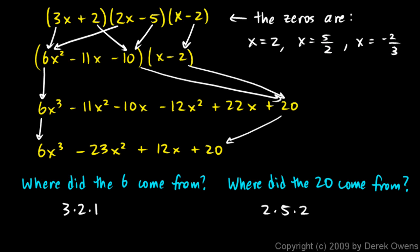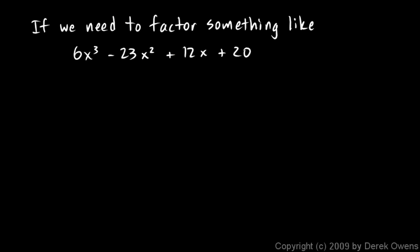So, I'll say that like this. If we need to factor something like this, 6x³-23x²+12x+20, a good place to look for the zeros of this polynomial would be the numbers in the list formed by taking factors of 20 divided by factors of 6.